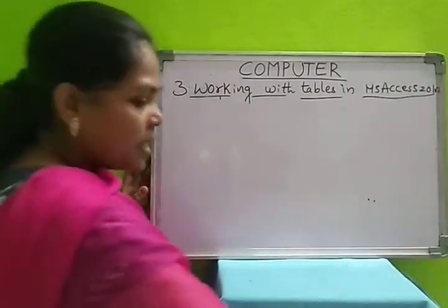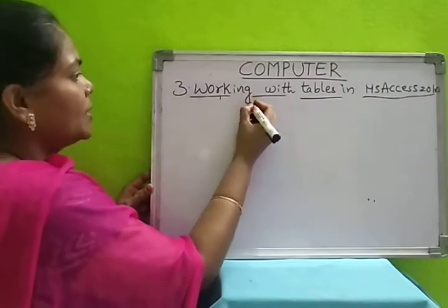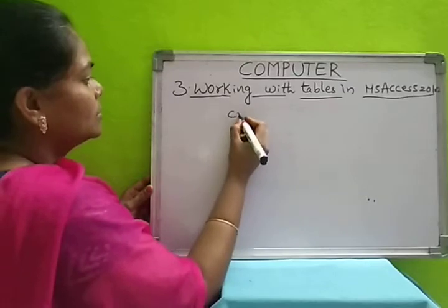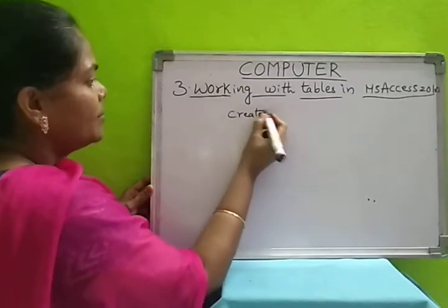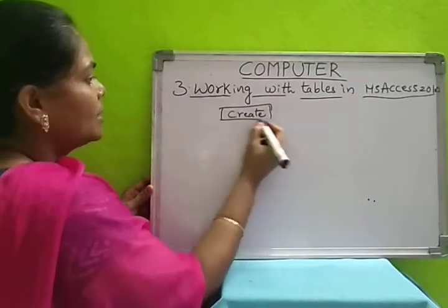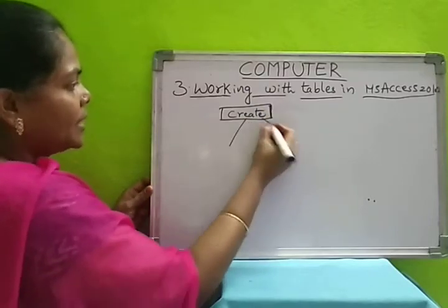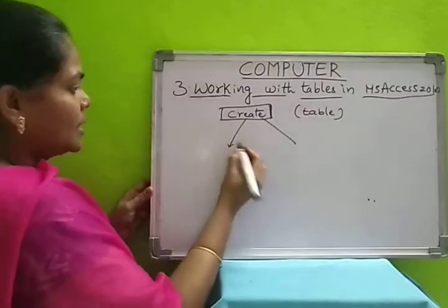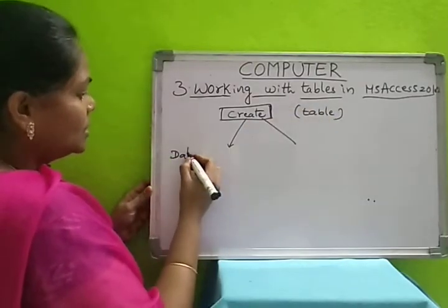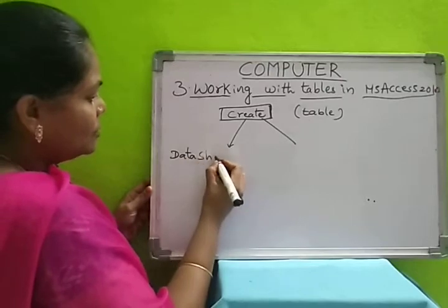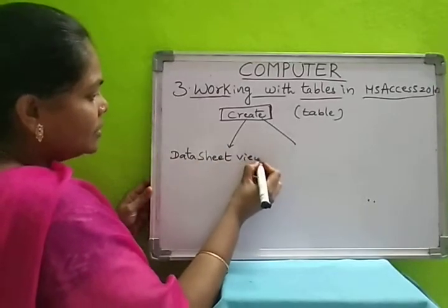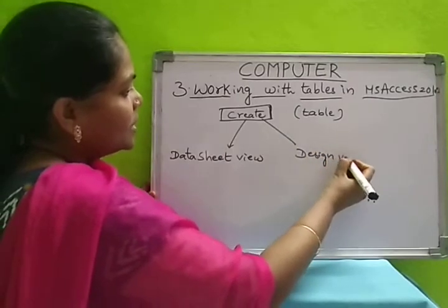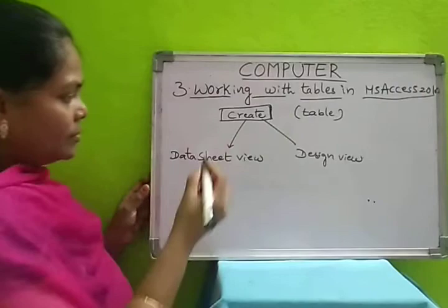Now we will learn how to create a table. To create a table we have two types — we can create in two modes. Here we have the Create button. We can create a table in two types: one is datasheet view, and the other is design view. In both views we can create a table.